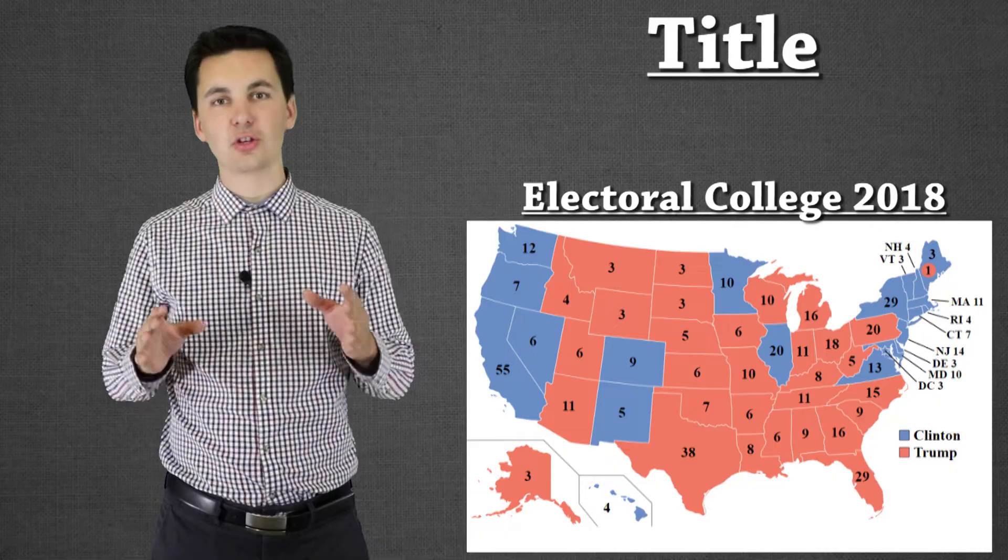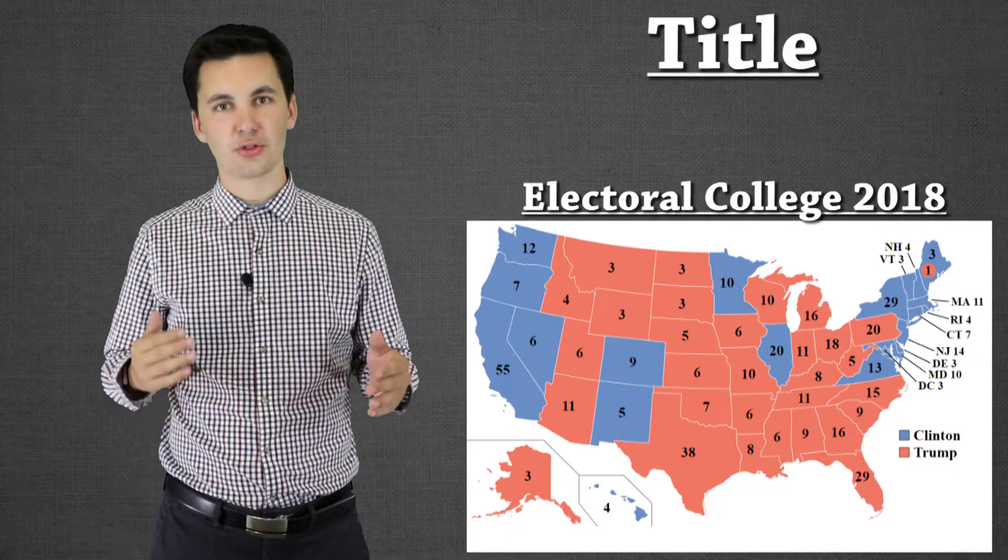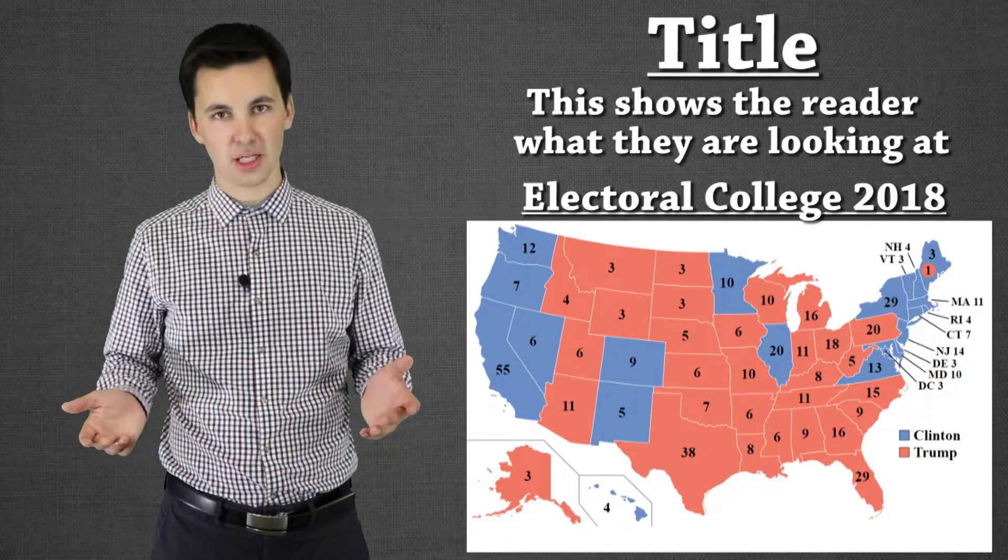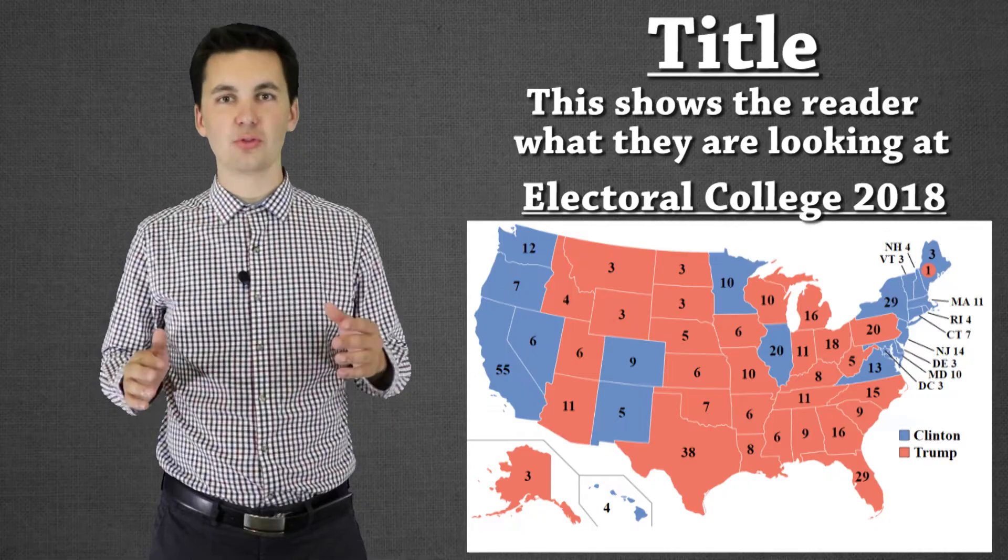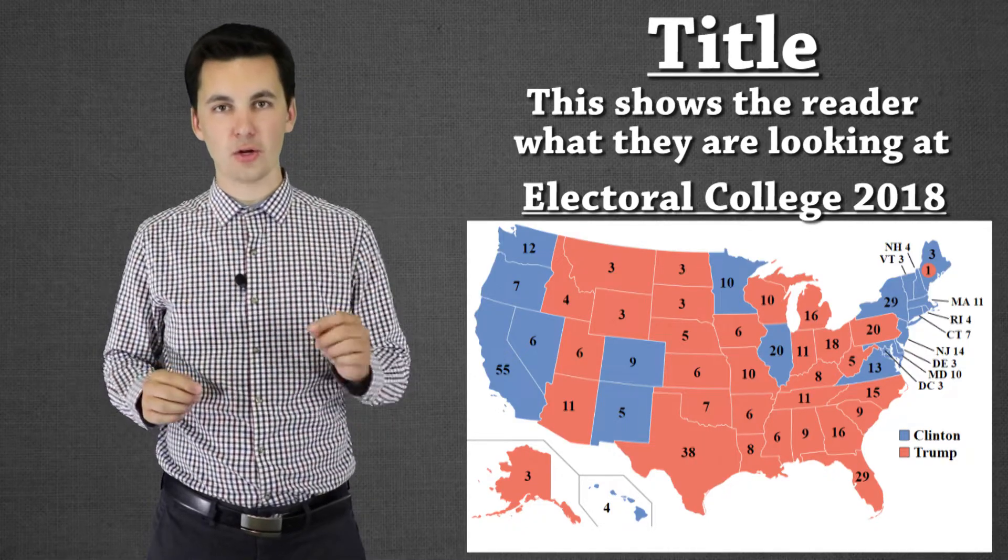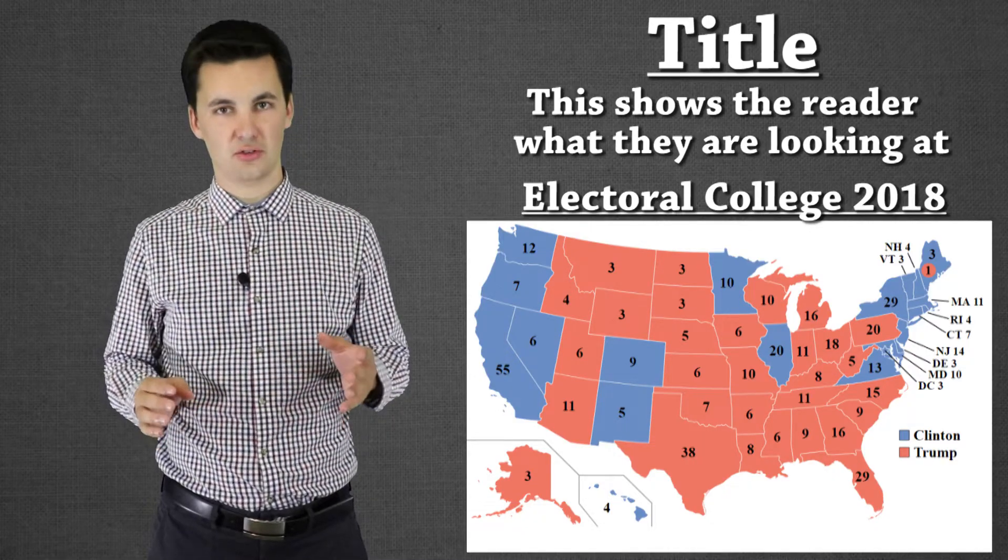The first part of TODALS is the title. Now this is pretty simple. Really the goal of the title is to make sure that the reader knows exactly what they're looking at. You want to title the map so that it's very clear right away what is being presented on this map.